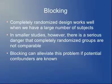So if you have a smaller study, there's a non-negligible danger that your randomized groups are not comparable — that you could end up with systematic differences between the treatment group and the control group other than the treatment itself. And if you know in advance that potential confounding variables might exist, you can ameliorate this problem using a technique known as blocking.